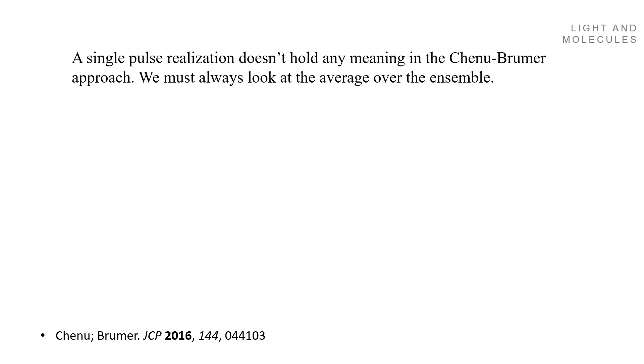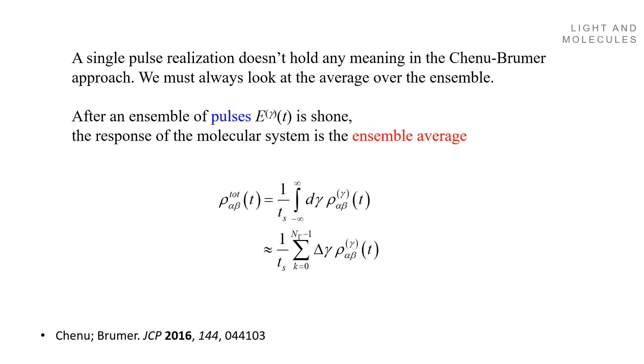The most essential point in the Chenau-Brumer approach for thermal light is that one single pulse doesn't have any meaning. You must always do an average of an ensemble to get the results. And after an ensemble of many pulses, the average is computed in this way here, either in the form of integration or in the form of a sum.